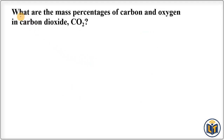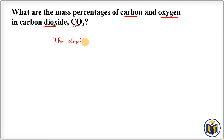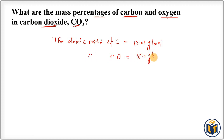The first problem asks: what are the mass percentages of carbon and oxygen in carbon dioxide (CO₂)? Two elements are present: carbon and oxygen. Since no additional data is provided, we use atomic masses. The atomic mass of carbon is 12.01 g/mol, and the atomic mass of oxygen is 16.00 g/mol. Since there are two moles of oxygen in CO₂, we multiply 16.00 by 2.